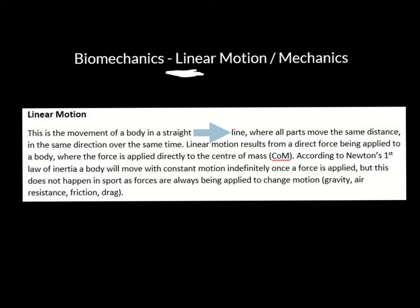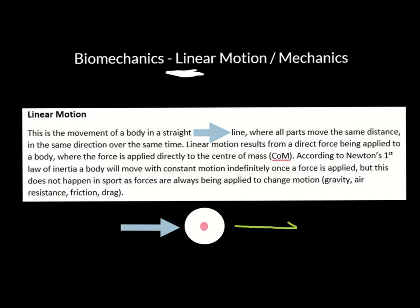Now for an object to travel in a straight line, the force being applied to the object must travel through the object's centre of mass. I've done a video on centre of mass, balance and stability, so if you're struggling with that it's worth a look. Here's a simple example: imagine this circle is a football. The red dot represents the ball's centre of mass. If I apply force straight through that centre of mass — if I kick the ball right through the centre — that ball will travel in a straight line. It will have linear motion.